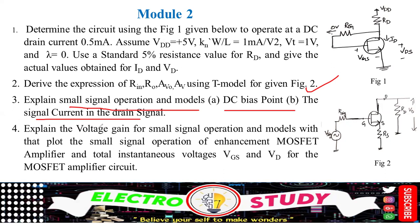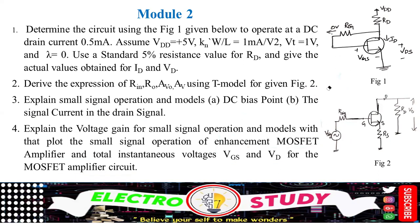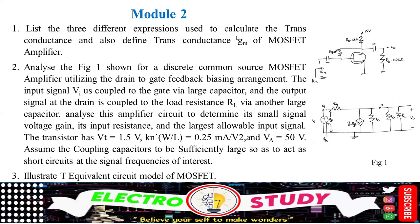This is an application-level question. Explain the voltage gain for small signal operation and the models with a plot of the small signal operation. Cover the enhancement MOSFET amplifier and the total instantaneous voltages VGS and VD for the MOSFET amplifier circuit. Also, list the three different expressions used to calculate the transconductance and define the transconductance gm of the MOSFET. If you know the output characteristics, you can easily define and explain the transconductance characteristics by taking the slope.